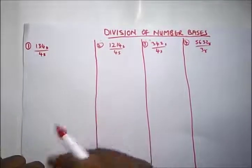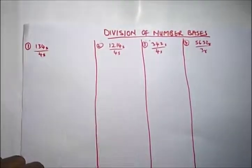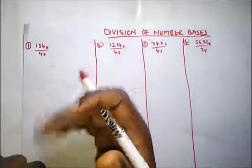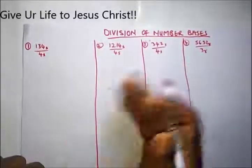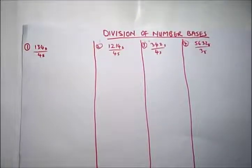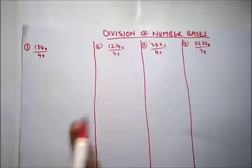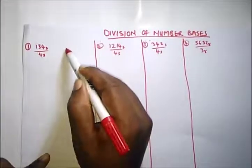Just like our normal multiplication table — 1 times 1, 2 times 2, and so on — but this will be in base 5. We have to create the multiplication table to enable us to do this division. We're going to use the normal method of long division, but in base 5. I hope you've watched the videos on addition, multiplication, and subtraction of number bases, because we're going to apply all of those here.